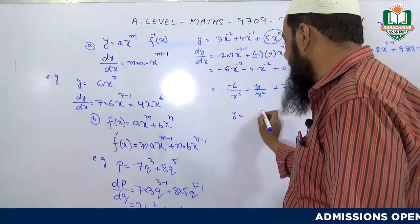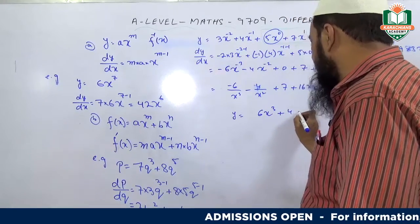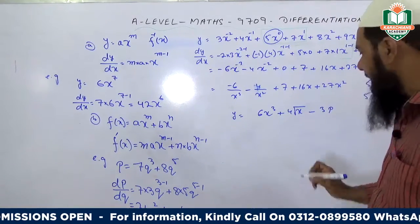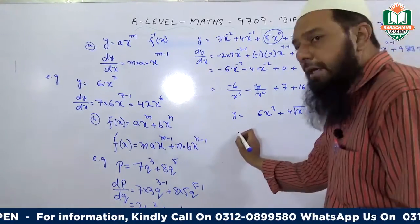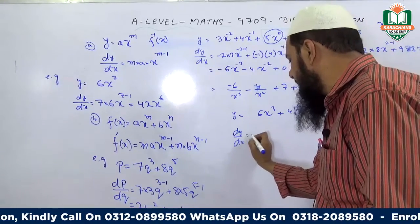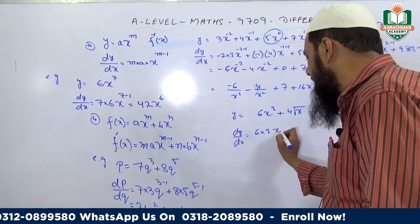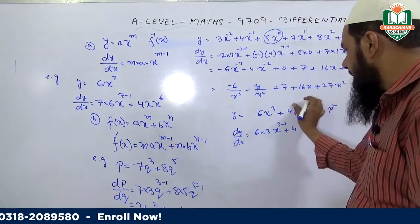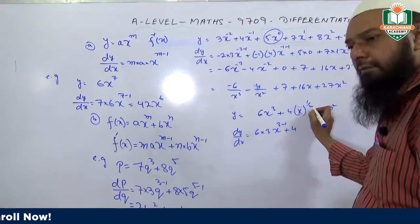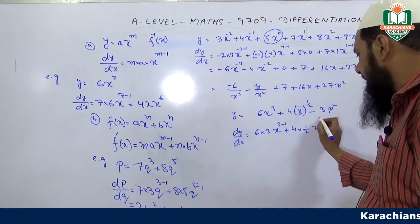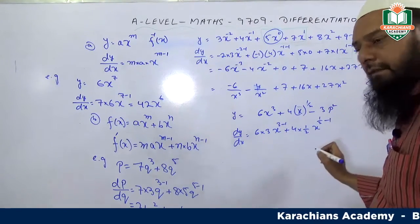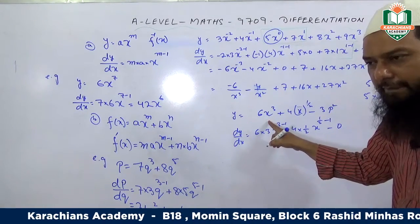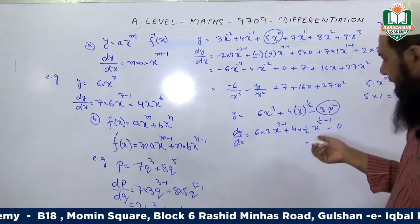Now let's see: y equals 6x^3 plus 4√x minus 3. dy/dx equals 6 times 3x^(3-1) plus 4 times (1/2)x^(1/2 - 1) minus 0, because the constant 3 gives 0 when differentiated.